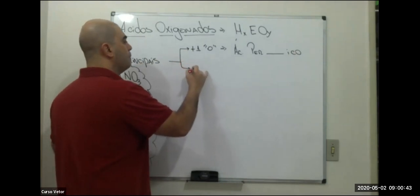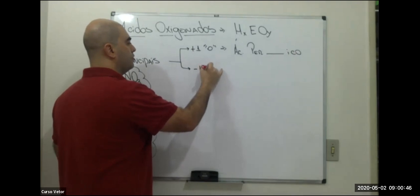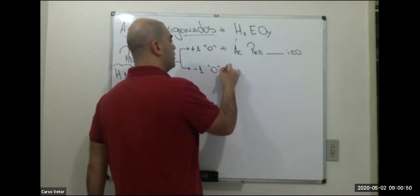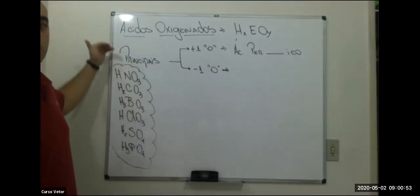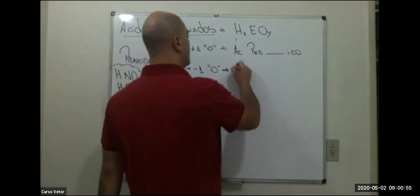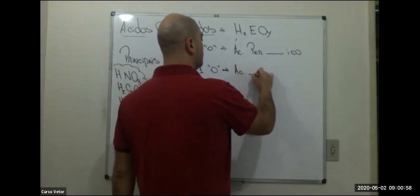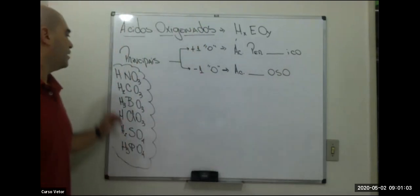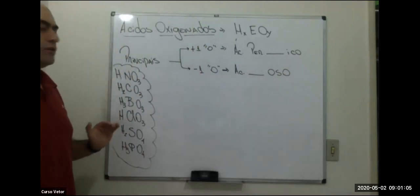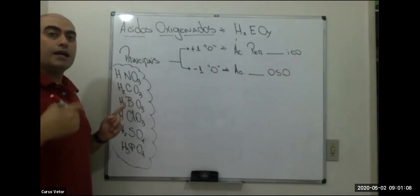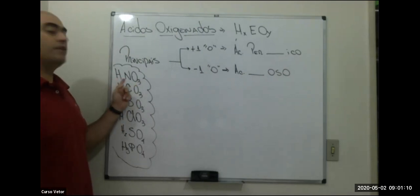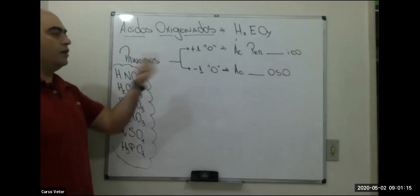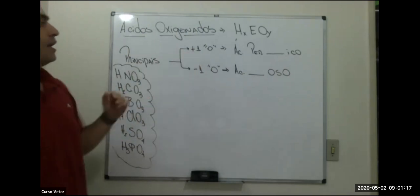Os ácidos principais também podem perder um oxigênio. Se perderem um oxigênio, a terminação que era '-ico' muda para '-oso'. Por exemplo, o nítrico HNO3 pode virar HNO2, e aí ele vira o ácido nitroso.